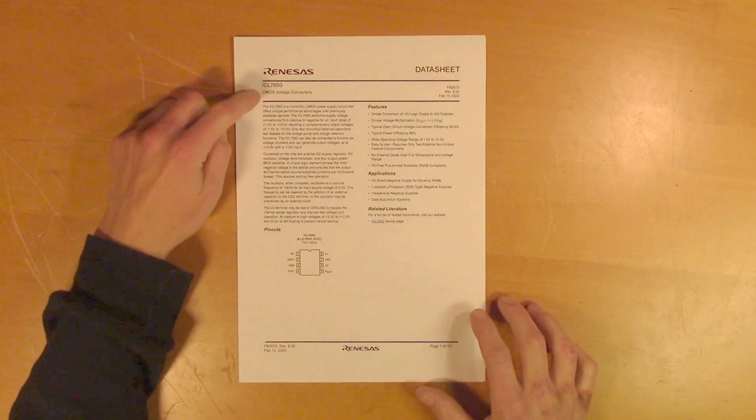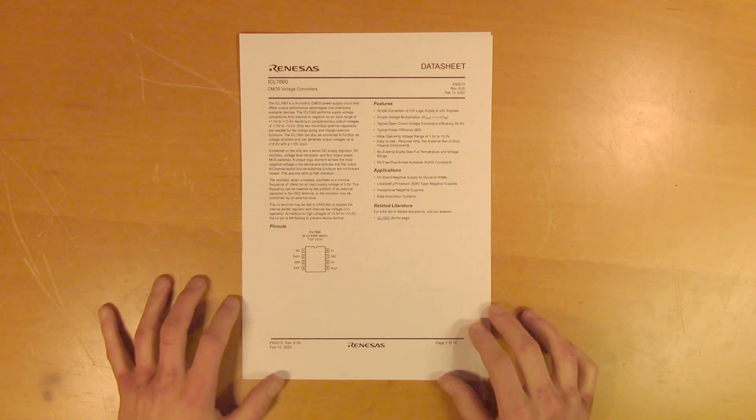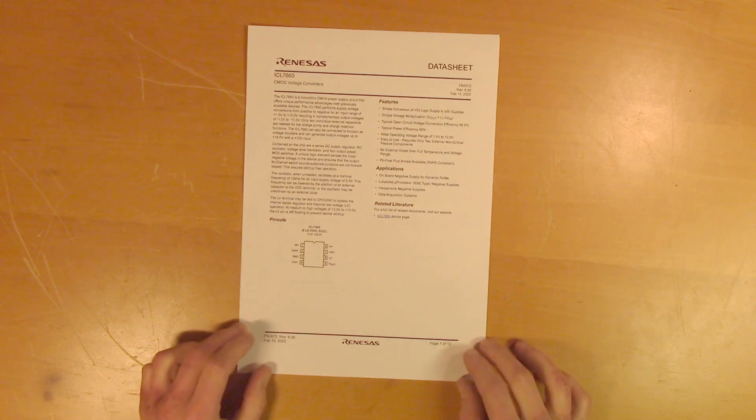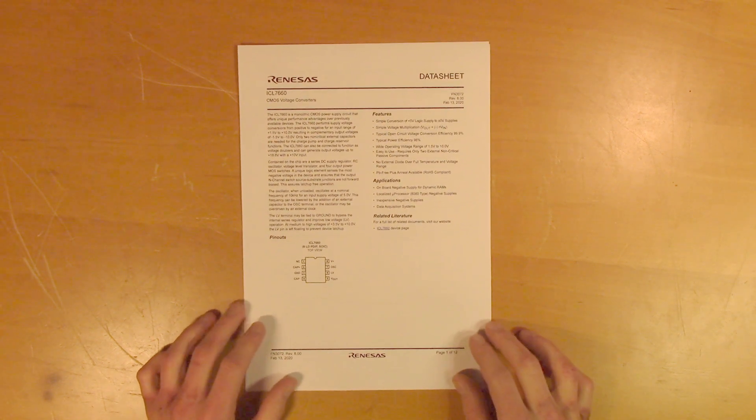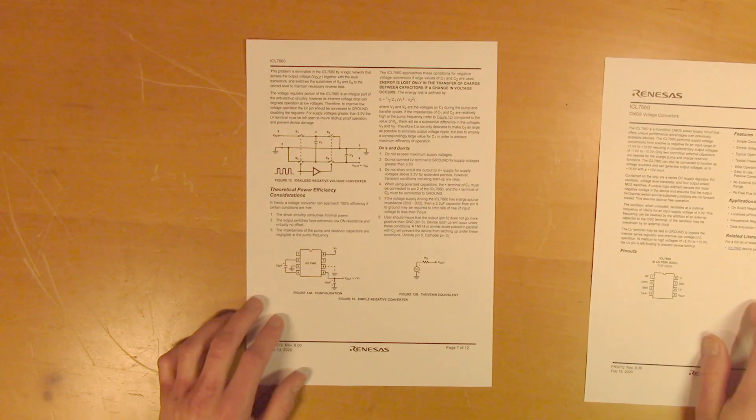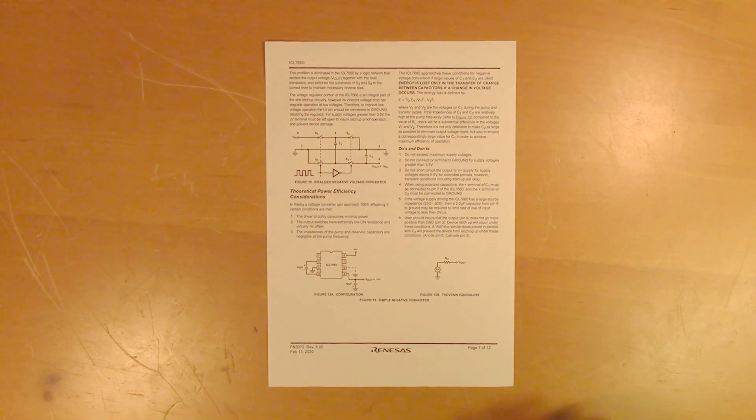This is the datasheet for the ICL 7660. This is the charge pump that's sitting on the opposite side of the PCB from the faulty capacitor. This datasheet does a pretty good job of explaining what a charge pump does, and there's one sheet in particular that I think is very useful. So we'll take a closer look at this picture to understand how a charge pump works.